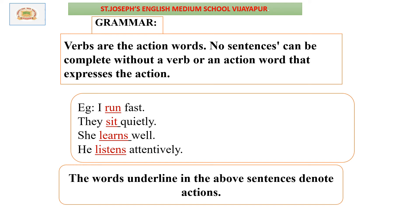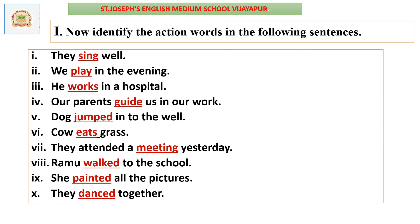Grammar: We have already studied the parts of speech. Verbs are also called action words — no sentence can be complete without a verb. For example: 'I run fast,' 'They sit quietly,' 'She learns well,' 'He listens attentively.' The underlined words are called action words. 'Run,' 'sit,' 'learn,' and 'listen' all show the action being performed by the subject.